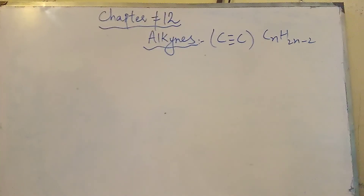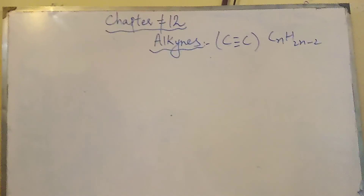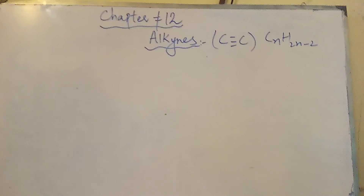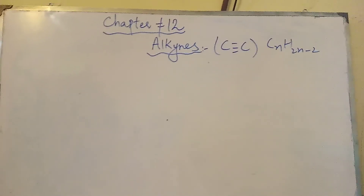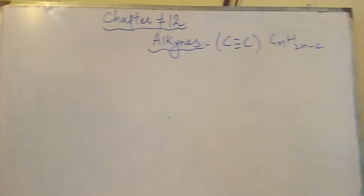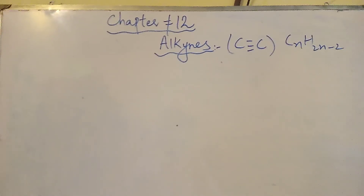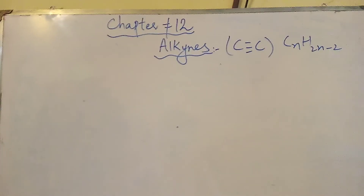Assalamualaikum girls. Today we will study about alkynes. Alkynes, as I have told you before, contain a carbon-to-carbon triple bond and their general formula is CnH2n-2.